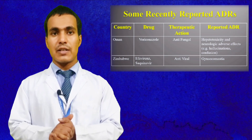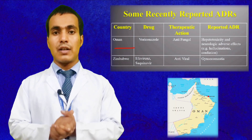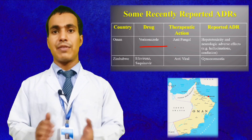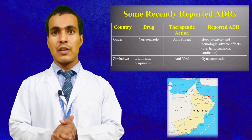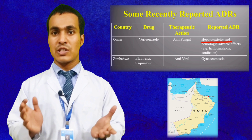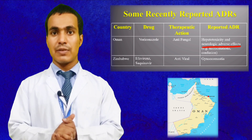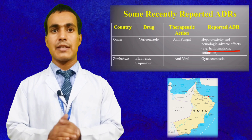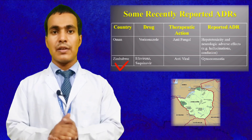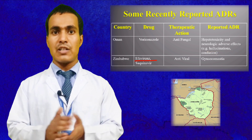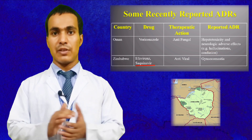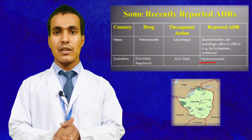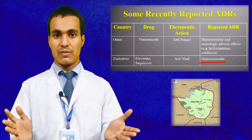Some recently reported ADRs: Country — Oman; Drug — voriconazole; Therapeutic action — antifungal; Reported ADR — hepatotoxicity and neurological adverse effects including hallucination and confusion. Second example: Country — Zimbabwe; Drugs — efavirenz and saquinavir; Therapeutic action — antiviral; Reported ADR — gynecomastia.